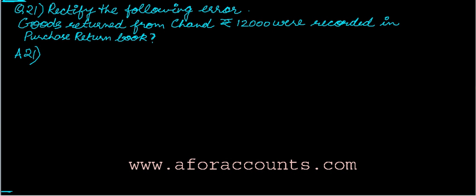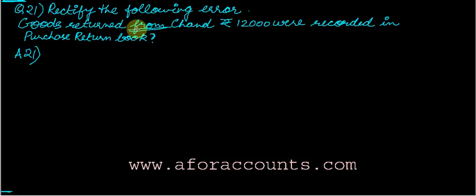Rectify the following error: goods returned from Chand, rupees 12,000, were recorded in the purchase return book. The word 'from' is very important — it tells us that I must have sold goods to Chand and he is returning them back to me. So it has to be sales return, not purchase return, but it was recorded in purchase return.